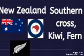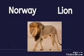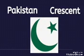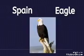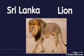New Zealand has kiwi, crows, and fern. Norway has lime. Pakistan has crescent. Spain has eagle.